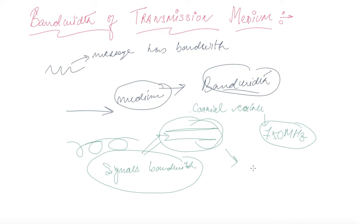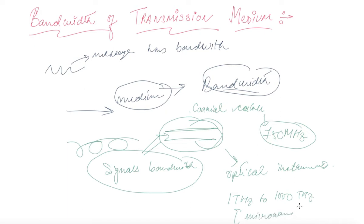If the signal's bandwidth exceeds the medium's bandwidth, there will be disturbance and the signal won't be received properly. For optical mediums, as given in your book, the frequency range is 1 THz to 1000 THz, which falls under the range of microwaves or ultraviolets.